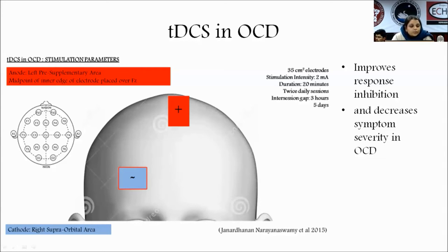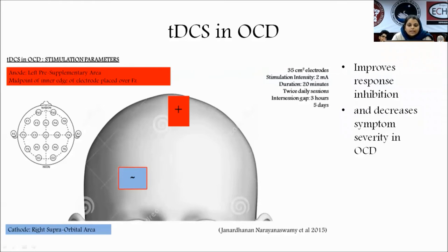In OCD, the anode is placed over the left pre-supplementary motor area, anterior to the motor cortex, with the midpoint of the inner edge of the electrode placed over the vertex of the 10-20 EEG system, and cathode placed over the right superorbital area. Twice daily sessions for five days with an interval gap of three hours. Electrode size 35 cm², intensity 2 mA, duration 20 minutes. It was found to decrease symptom severity and improve response inhibition.